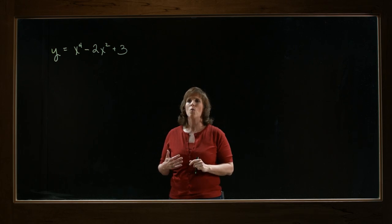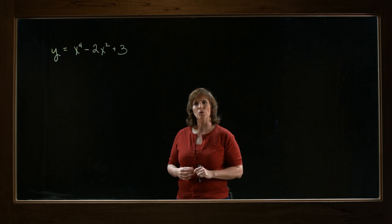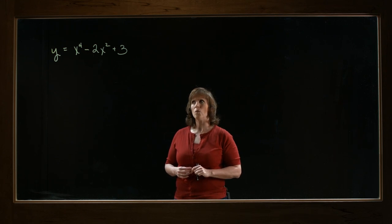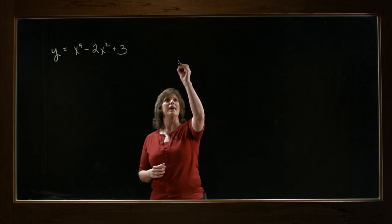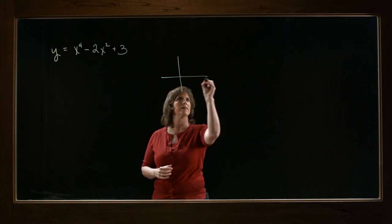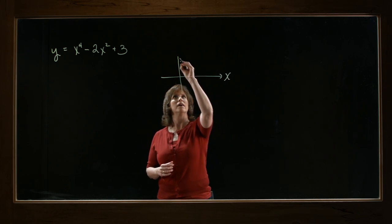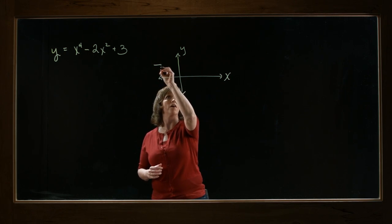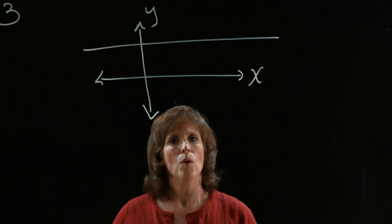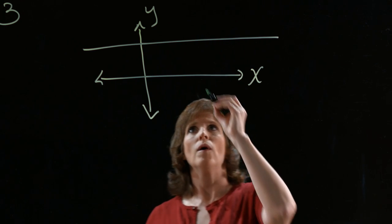So we want to find out where the tangent lines are horizontal. What happens when you have a tangent line that's horizontal? Let's take a look for a minute at a horizontal line. Any horizontal line at all. What do we know about the slope of this line?